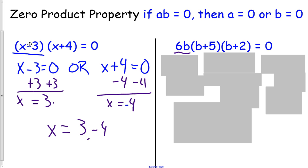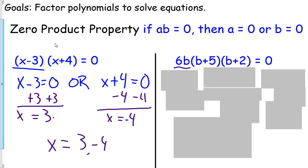Those are our two options that work. If you plugged it back in, three minus three is zero. Zero times four is zero. Negative four plus four is zero. So negative seven times zero is zero. So that's how both of them will work. You can plug it back in to see if it works.